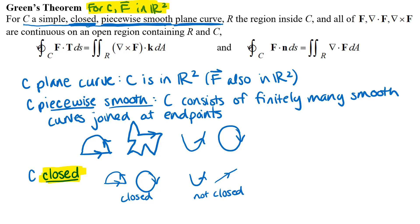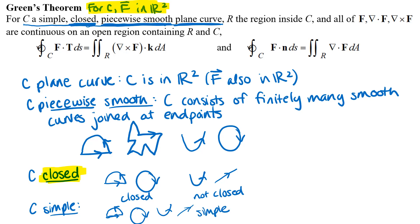The last vocabulary word says that C has to be simple. The basic idea is that a simple curve does not cross itself. Simple curves would be like the ones already drawn — a semicircle with a line segment, a circle, a parabola, or a line segment. Non-simple curves would be things like a figure eight or some curves from polar coordinates. We need to check all those conditions before we attempt to use Green's Theorem.